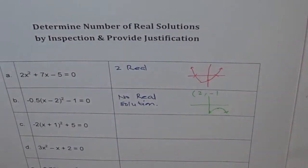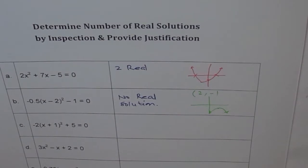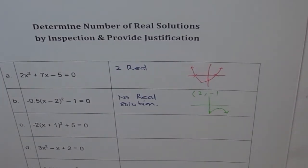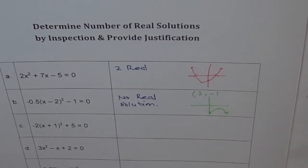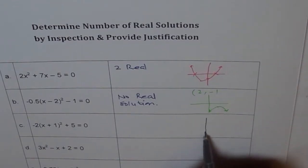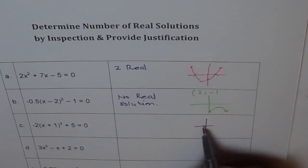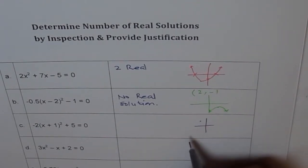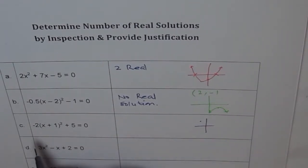The next one is also in the vertex form. Now here, what is the vertex? The vertex is at (-1, 5). -1 is on this side and 5 is plus somewhere here, you can say.